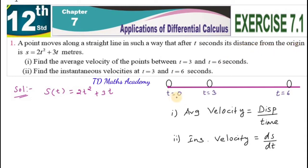At time 0, the origin is the starting point. We look at time 0, the third second, and the sixth second. This function takes time as input and gives s of t — the distance — as output.